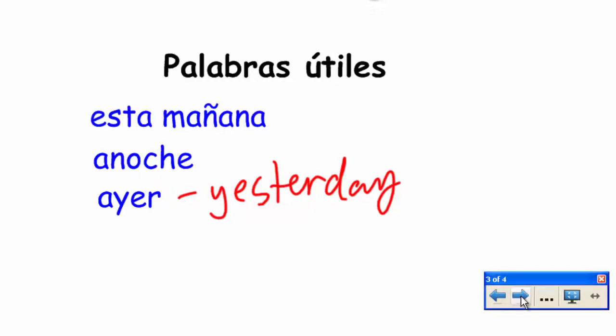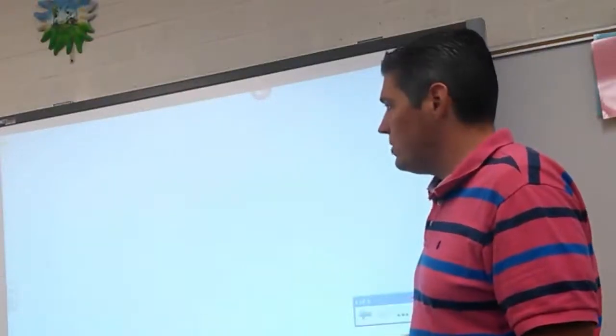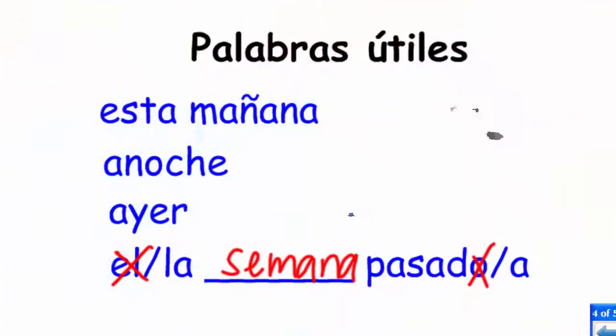And our last one. The last one that we are going to be using is actually a phrase el blank pasado or la blank pasada. For example, el mes pasado. El mes pasado. Mes is month. So, past month. The past month. In English, we would call that last month. Or, la semana pasada. Semana, of course, is a week. So, last week. La semana pasada. These are a few phrases that we are going to be using over the next year. Phrases we should know. Esta mañana. This morning. Anoche. Last night. Ayer. Yesterday. La semana pasada. Last week.